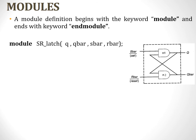First, we write the first line of code: module followed by the module name. The module name here is SR_latch — this is user-defined. Module name is followed by the list of input/output variables. We have S-bar, R-bar, Q, and Q-bar — four variables, of which S-bar and R-bar represent the input variables, and Q and Q-bar represent the output variables.